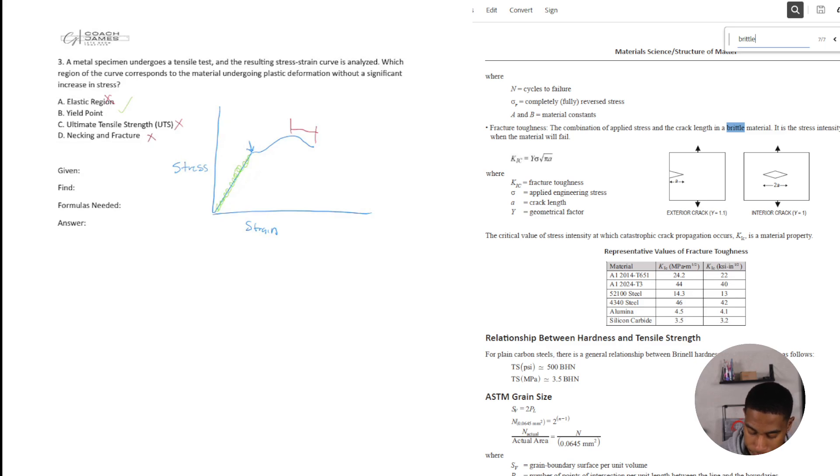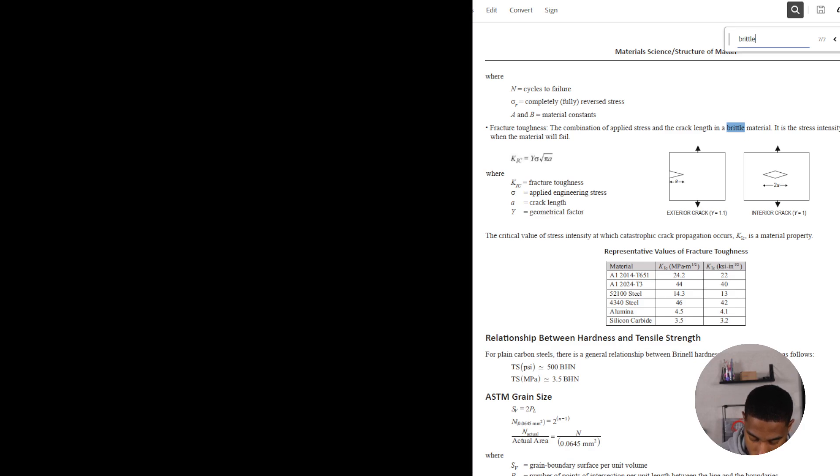So where there's barely any change in stress or strain happens at that yield, at that yield point, or B. All righty.